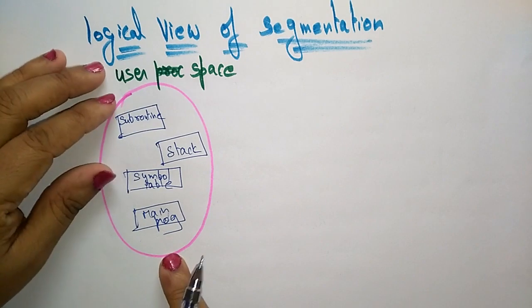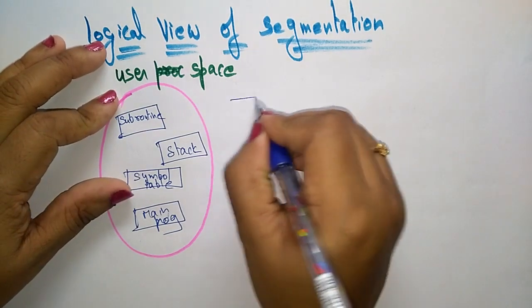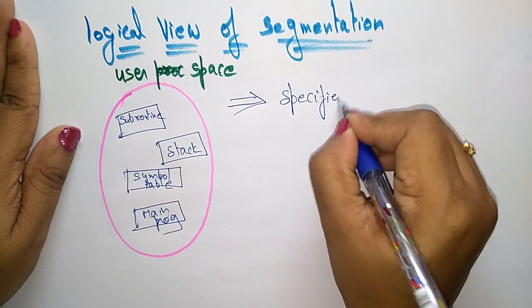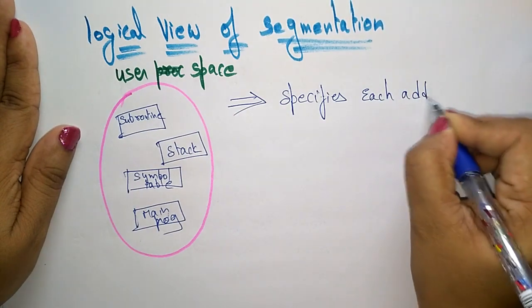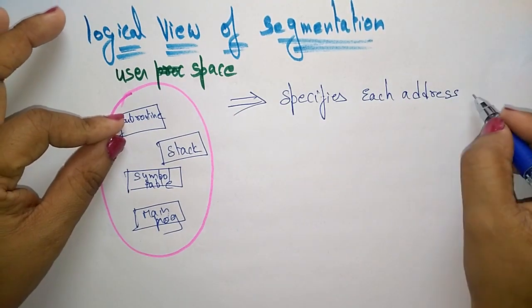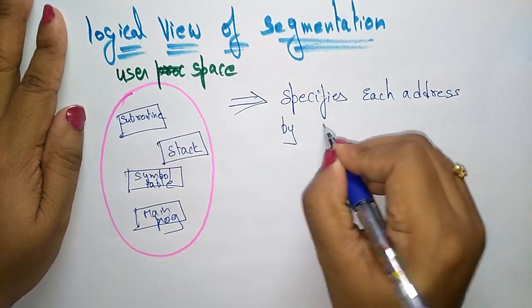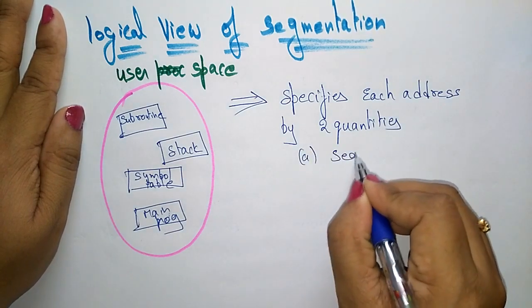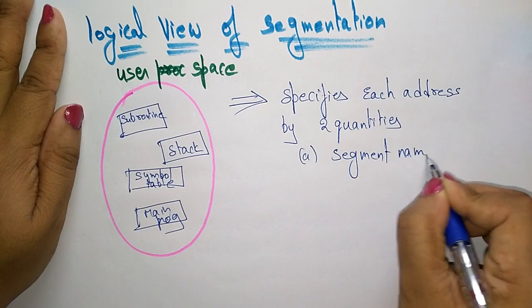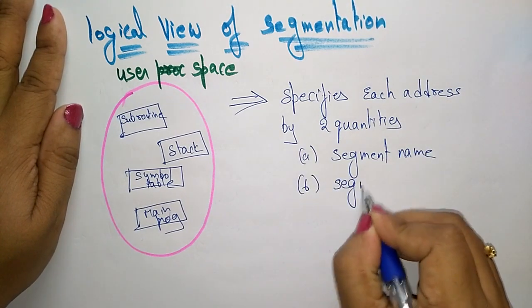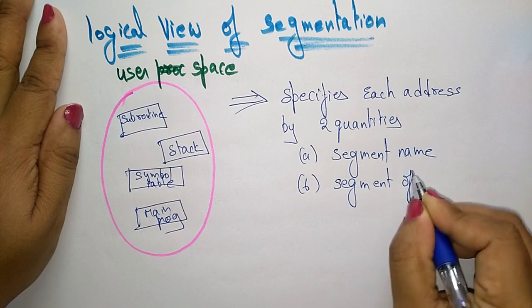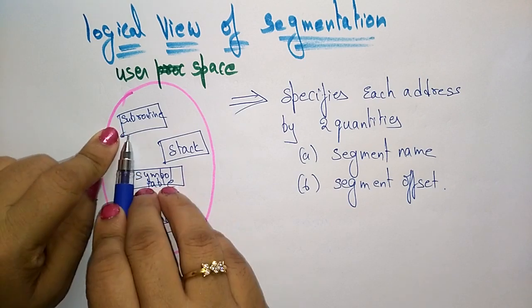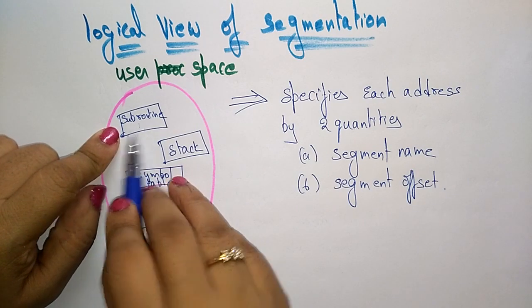The user specifies each address by two quantities. Each segment has some address, and the user specifies each address by two quantities: the segment name and the segment offset. Offset is nothing but it is the address. So the address of a subroutine consists of the segment name — that is, subroutine — and the subroutine offset.